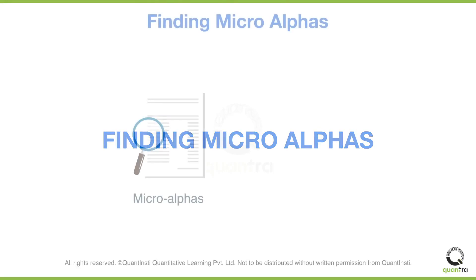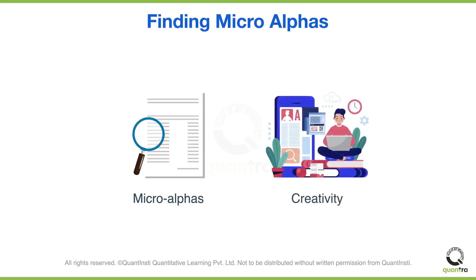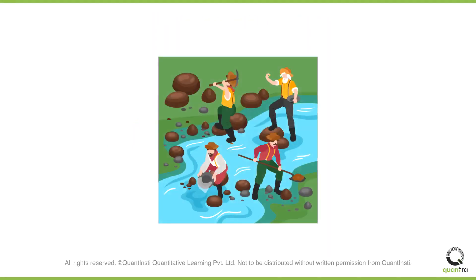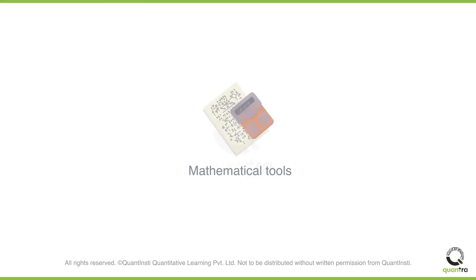For finding micro alphas, creativity is an indispensable prerequisite. Looking for alphas where many have looked before is like trying to find gold after the site has already been frequented extensively. It is, of course, important to know a wide suite of mathematical tools, but this is not enough.